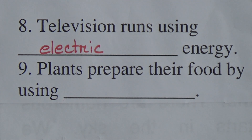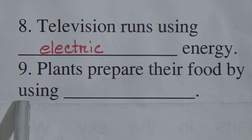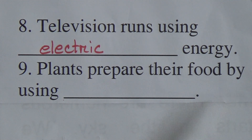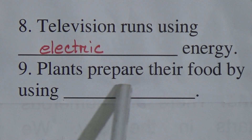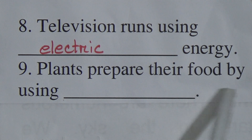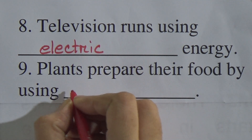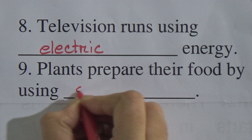Our last one, number nine is: plants prepare their food by using dash. The answer is sunlight. Plants prepare their food by using sunlight. So we will write here: sunlight.